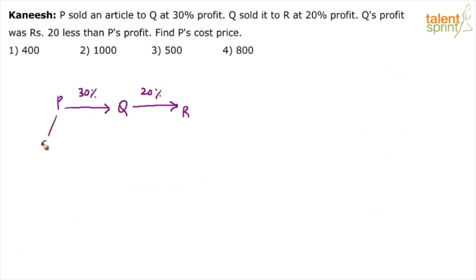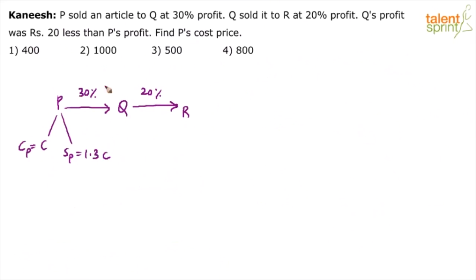Let us assume that P's cost price is C. What will be P's selling price? Selling price of P will be 1.3C. If the profit is 30%, selling price will be 130% of the cost price. So 130% is 1.3 times of the cost price, which is C.